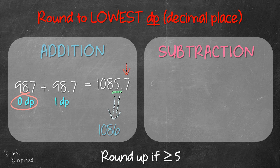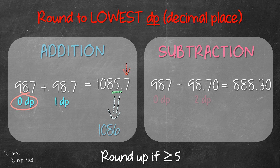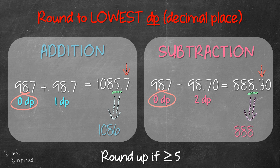Next, we look at the subtraction example. The same rule applies. 987 has zero decimal places and 98.70 has two decimal places because there are two digits that come after the decimal point. Following the rule, our answer will be presented in zero decimal places. We look at the digit after the decimal point, which is 3, and since 3 is less than 5, we don't need to round up. So our final answer is 888.